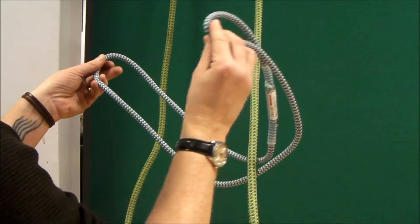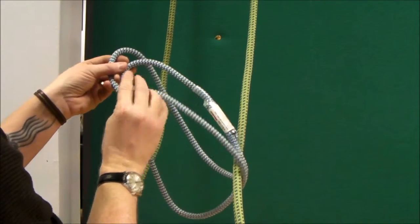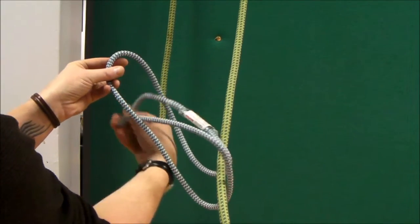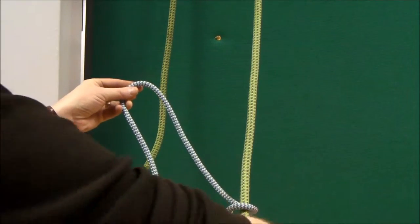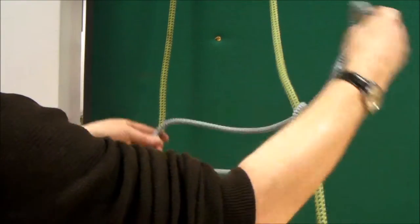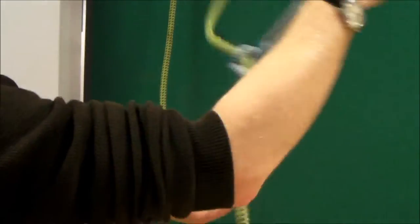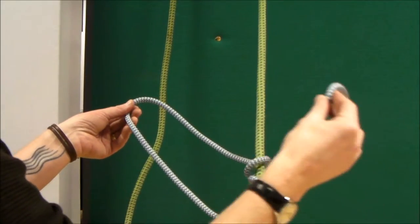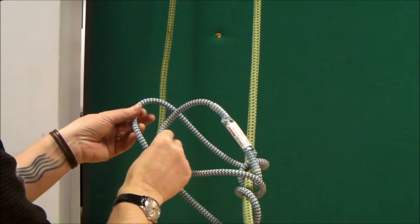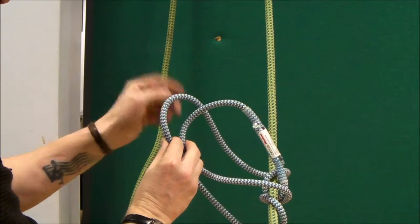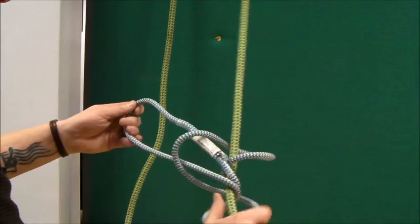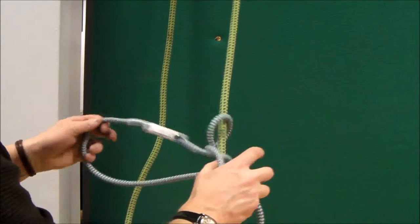So once it's there, with the right hand, feed it through this loop once. Bring it back round. So you've got that. Make sure it's in the middle. Then you do the same thing again. This goes through the loop again, but this time, with this hand, you feed it through completely. Like that.